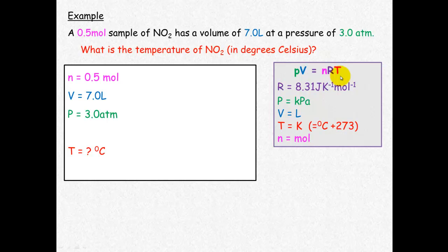Looking at PV equals nRT, we double check our units. The ideal gas constant is 8.31. Pressure needs to be in kilopascals,